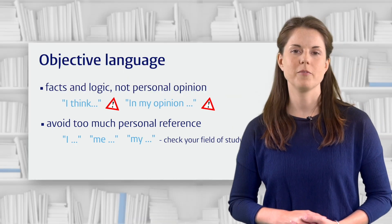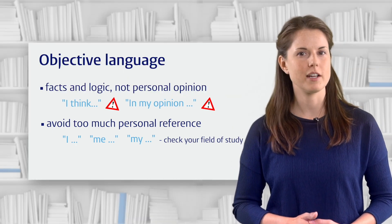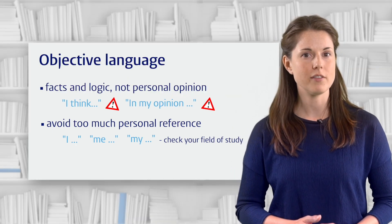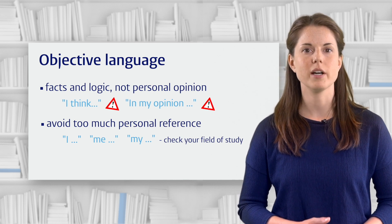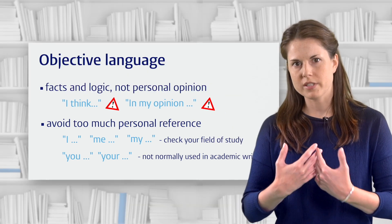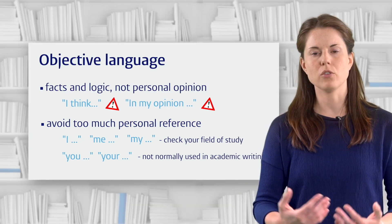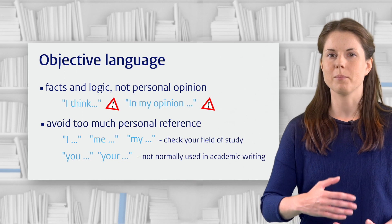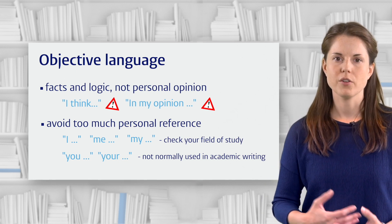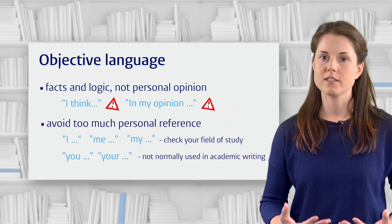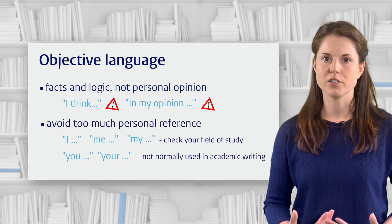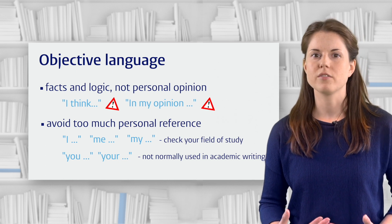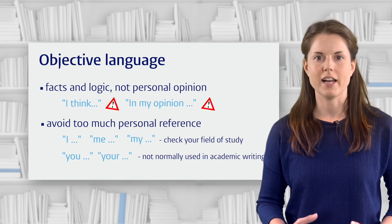One type of personal reference that academic writing almost never contains though is the words 'you' and 'your.' When we write, we're presenting an argument or some evidence to the reader, but we're not addressing them personally. So although academic writing is a kind of discussion, we never address the reader directly as 'you.'